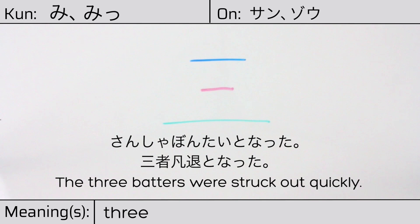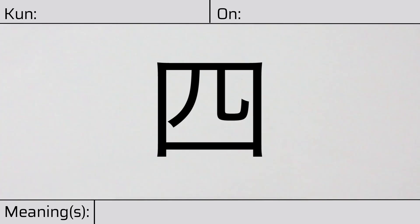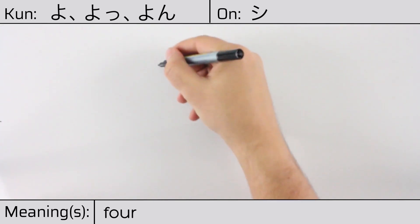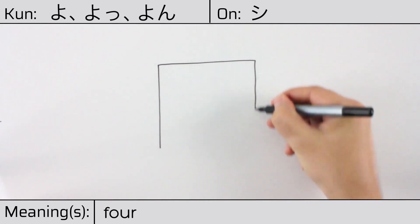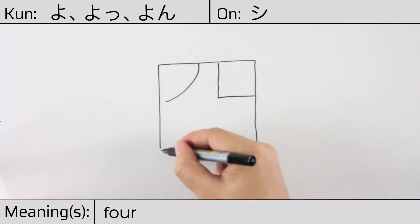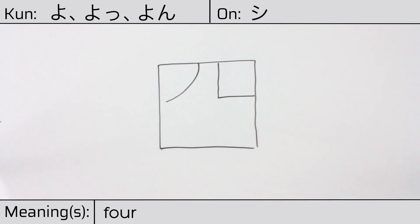This kanji has kunyomi or Japanese readings of yo, yo, or yon, and it has onyomi or Chinese reading of si. This character has the meaning four. Here is the stroke order: ichi, ni, san, si, go.